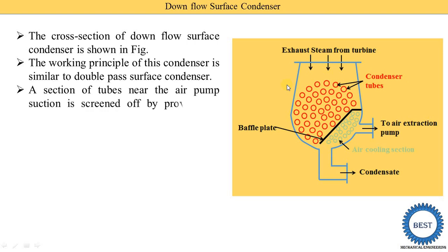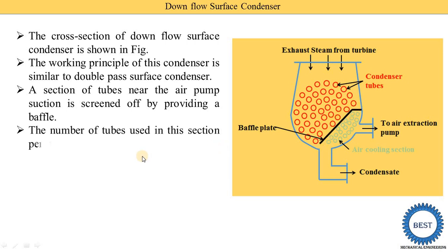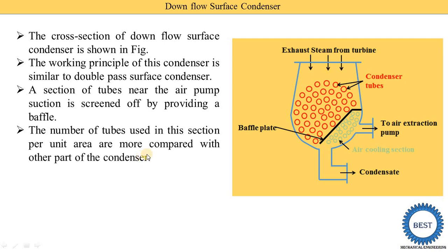A section of tubes near the air pump section is separated by providing baffle plates. The air pump is installed here, and this section near the air pump corresponds to the green colored tubes. The number of tubes used in this air cooling section is more than in other parts of the condenser — suppose in a one meter square area of the main section there are eight tubes, while in this region there are 12 or 15 tubes.